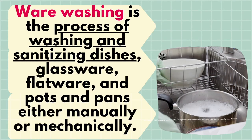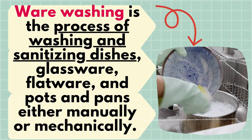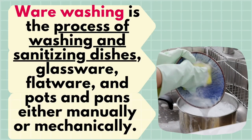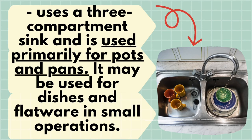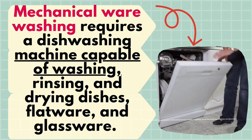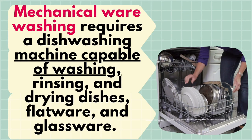Warewashing is the process of washing and sanitizing dishes, glassware, flatware, and pots and pans, either manually or mechanically. A three-compartment sink is used primarily for pots and pans, and may be used for dishes and flatware in small operations. Mechanical warewashing requires a dishwashing machine capable of washing, rinsing, and drying dishes, flatware, and glassware.